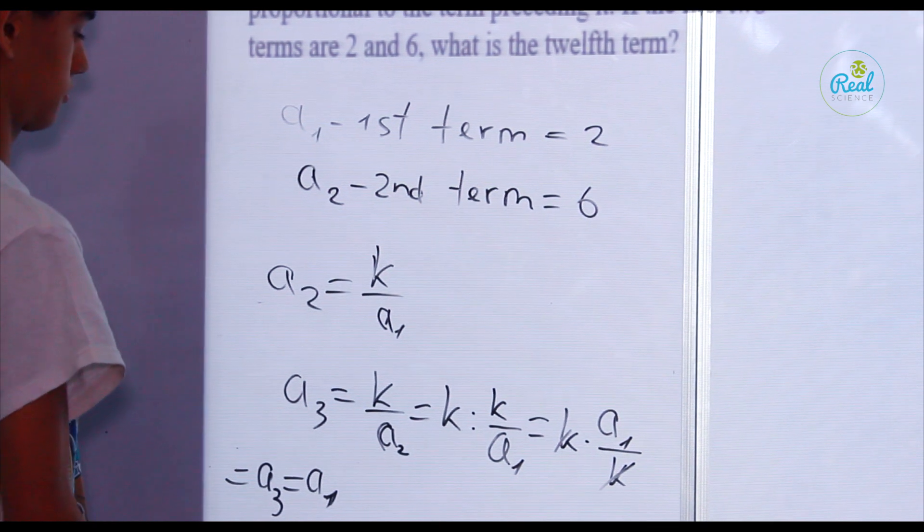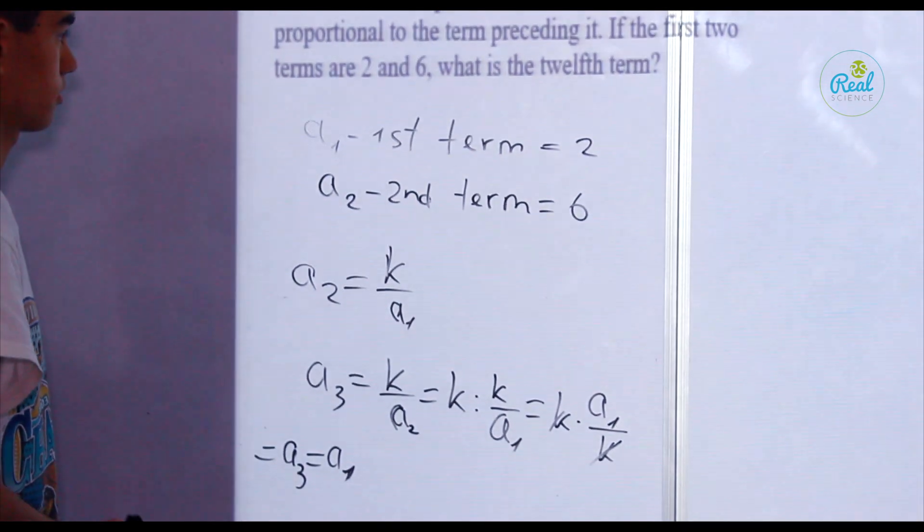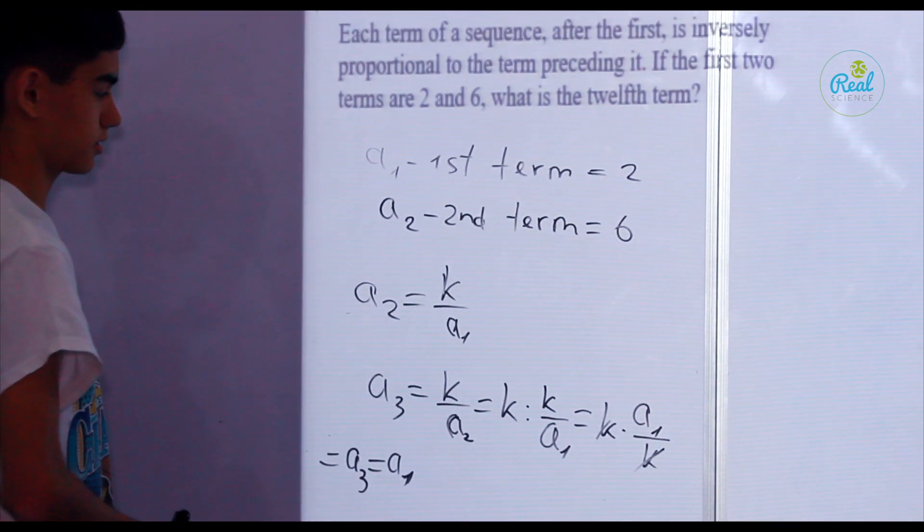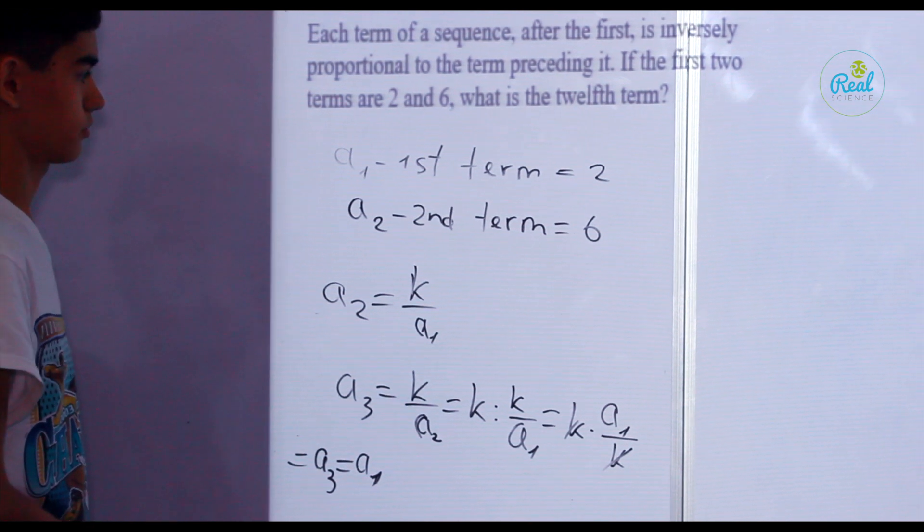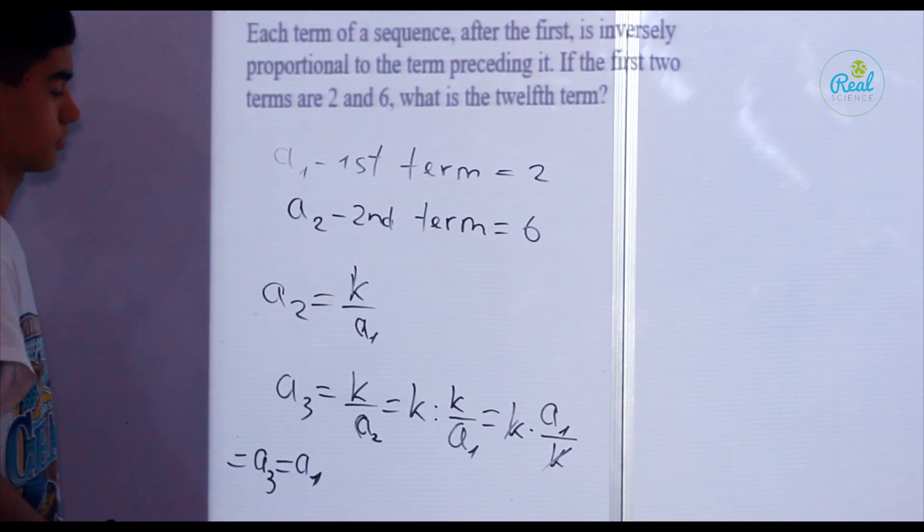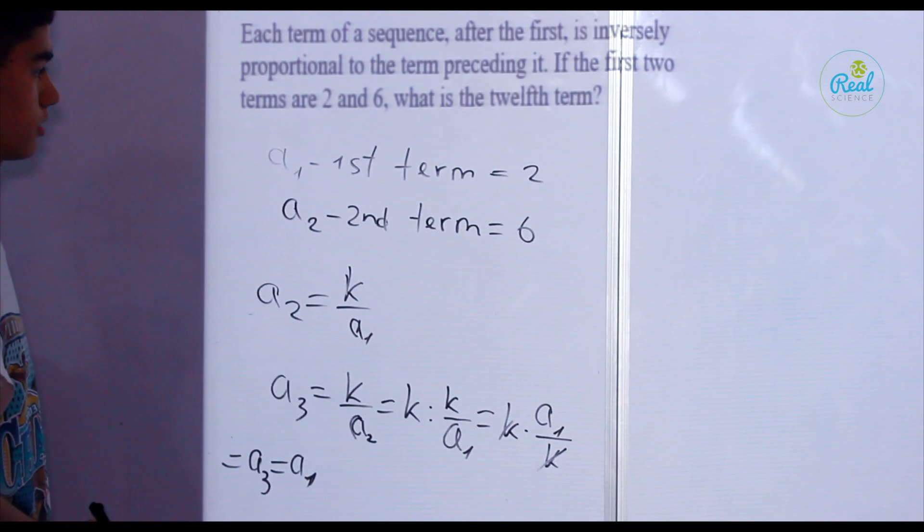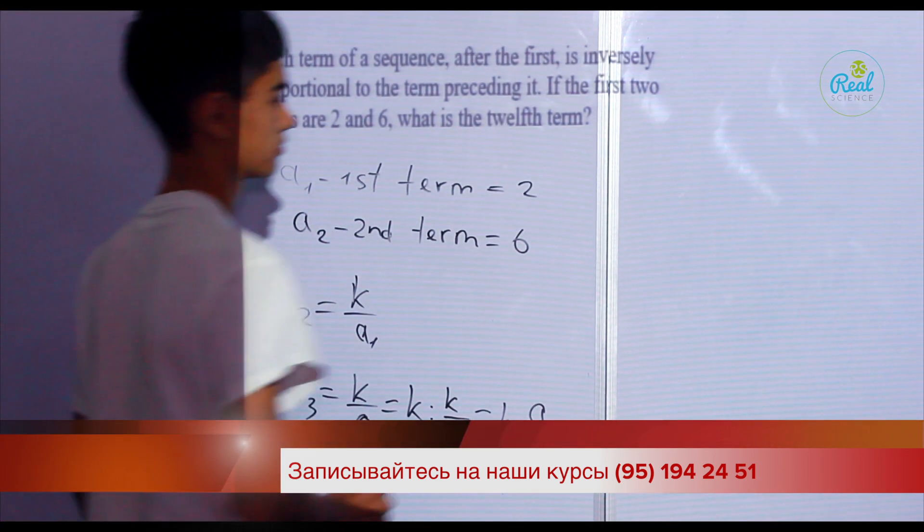Then, we understand that terms that are on even positions are equal to each other and odd numbers also equal to each other. So, as the twelfth term is an even number, we know that it is equal to the second term.